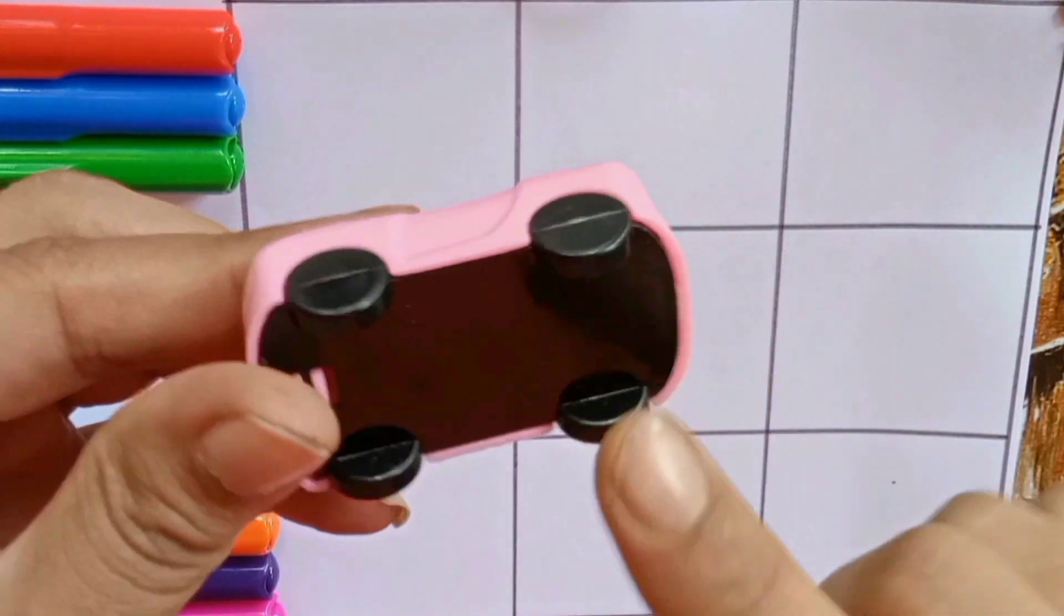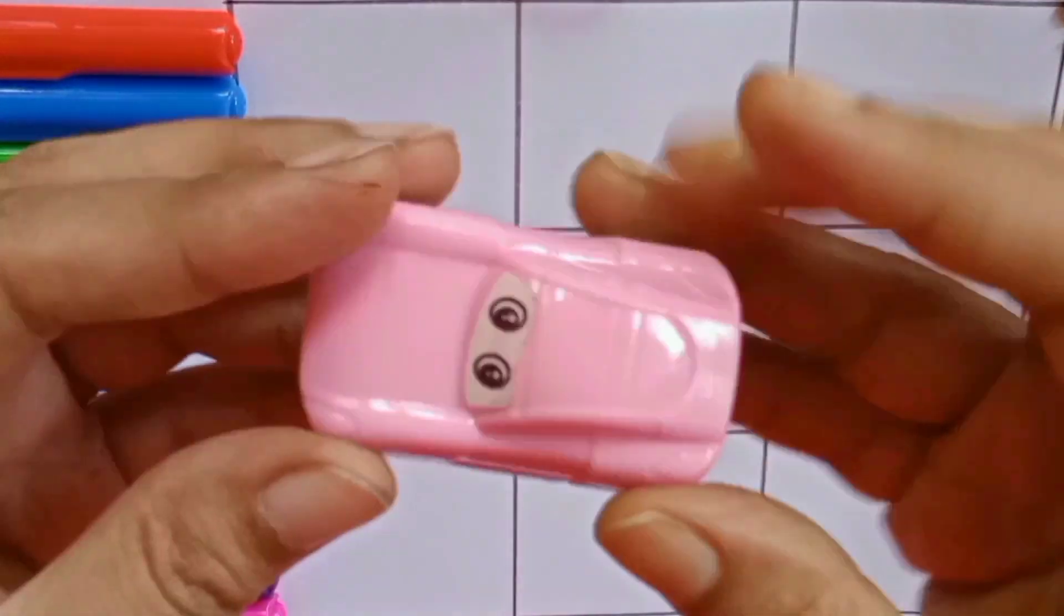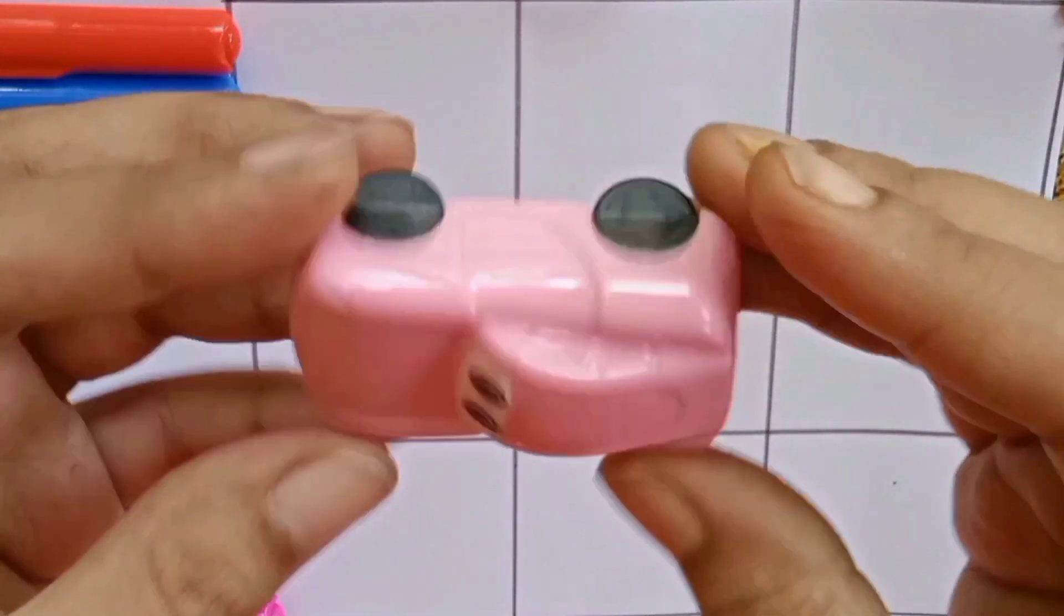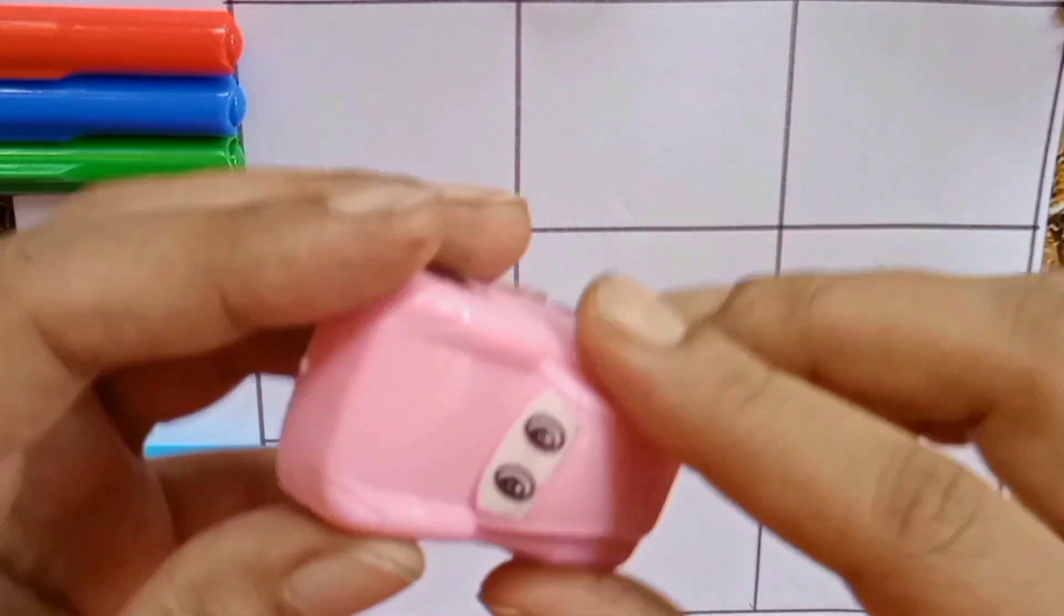1, 2, 3, 4, 4 wheels. This is a pink color car, it has two eyes, black color eyes.